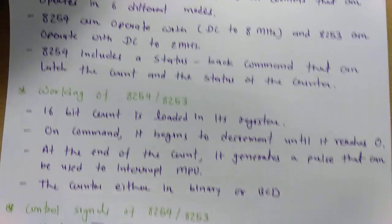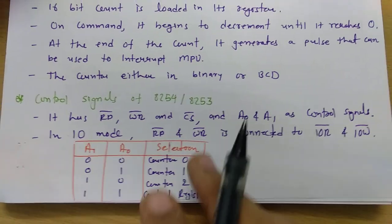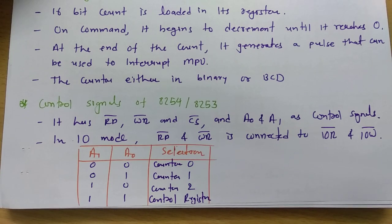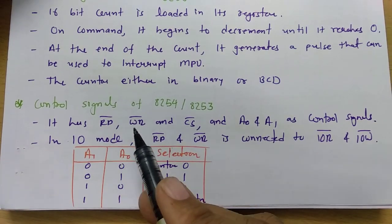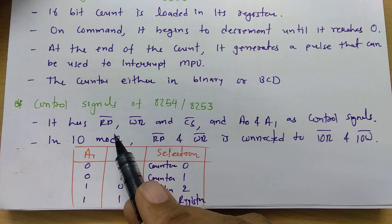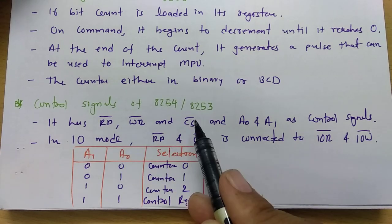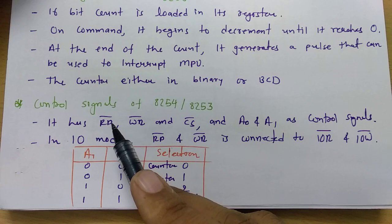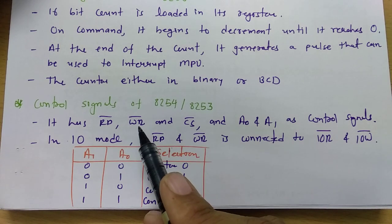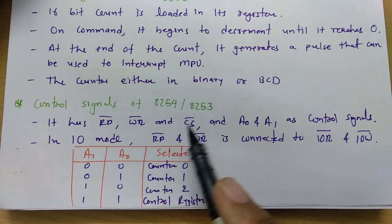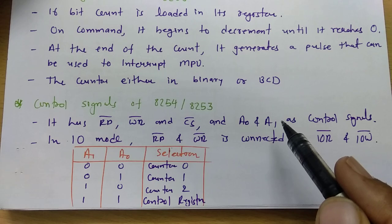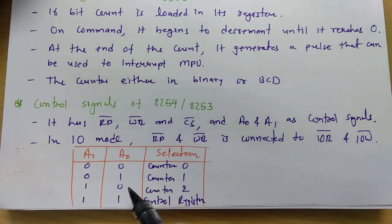Now let us look at the control signals of 8254. There are 5 important control signals: Read bar, Write bar, Chip Select, A0, and A1. Read bar is used by the microprocessor to read data. Write bar is used to write data. Chip Select selects the chip. A0 and A1 are used to select the counter.